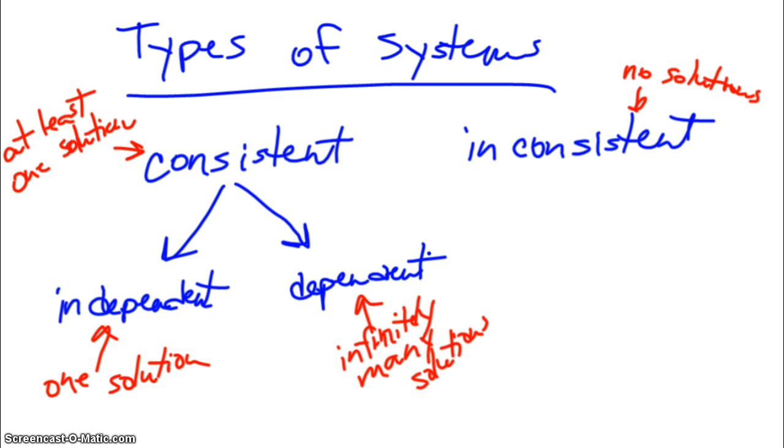So, the next thing we're going to do is talk about what those things mean graphically. Infinitely many solutions. So, get that in your notes. Those are four words that I guarantee you you're going to need to know. You're going to need to be able to classify systems based on the number of solutions.